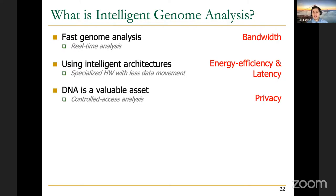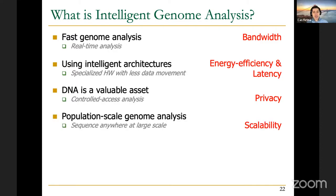We also know that DNA is a valuable asset — it can show critical and sensitive information about yourself, so it should be kept secret and private. That's another direction we're following in our group. It's also important to be able to perform population-scale genome analysis. We can try to analyze thousands of individuals at once rather than allocating all computational resources to a single individual. It's important to build data structures that can represent the population itself so that you're making your analysis compared to an entire population. Scalability in the designs is key for population-scale genome analysis.